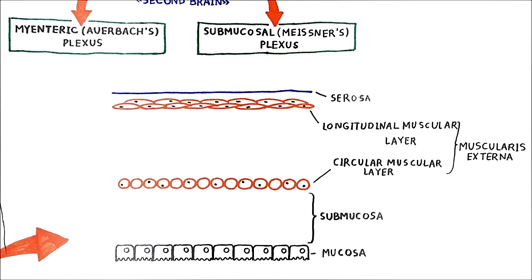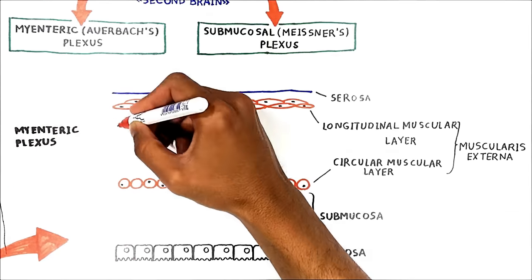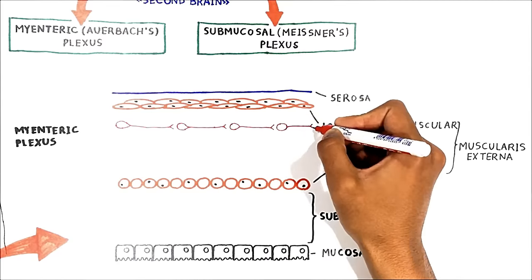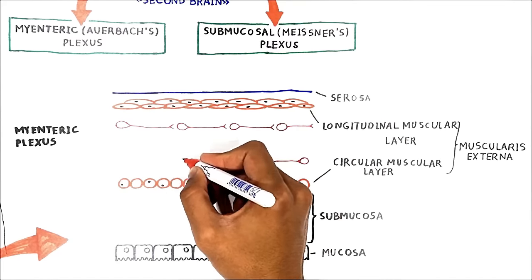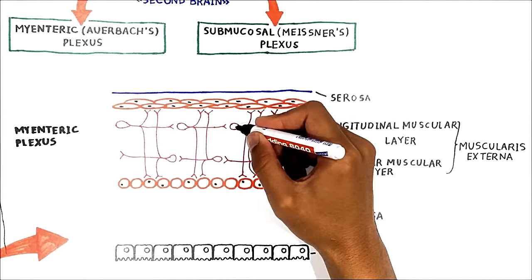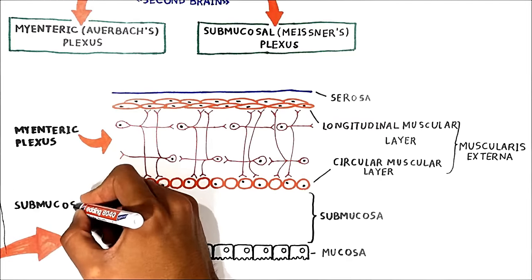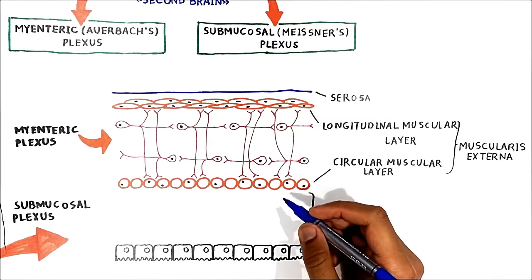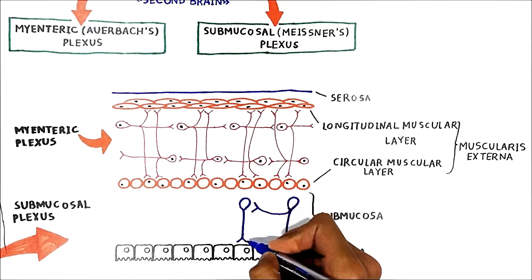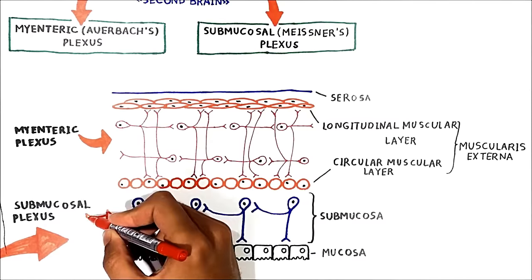The principal components of the enteric nervous system are two plexuses of neurons. The first, the myenteric plexus, is located between the longitudinal and circular layers of muscle in the muscularis externa — it is a network of neurons here. The second plexus, the submucosal plexus, as its name implies, is buried in the submucosa. In general, the enteric system consists of some hundred million neurons.